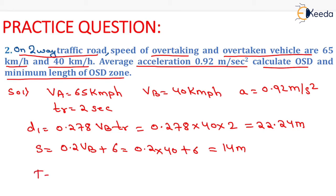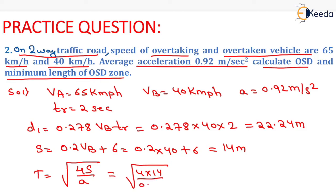Capital T equals the square root of (4S / a). Here the value of S is 14 m and the value of a is 0.92 m per second square. On solving this, we get the value of T as 7.8 seconds.